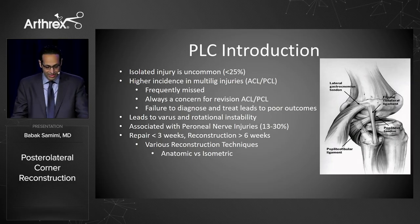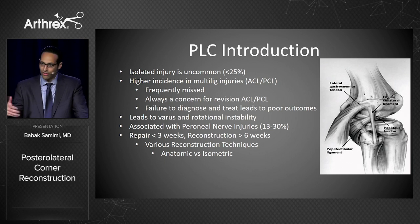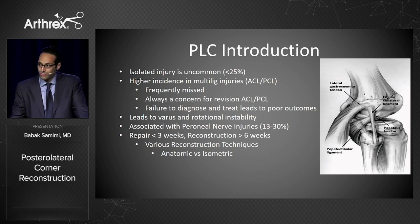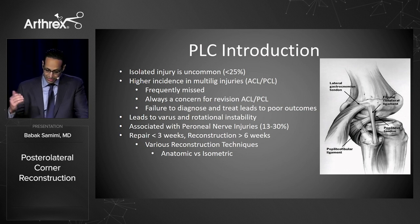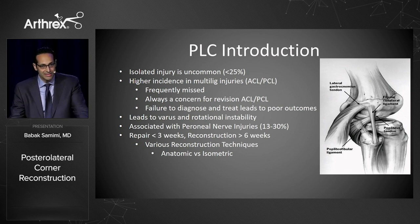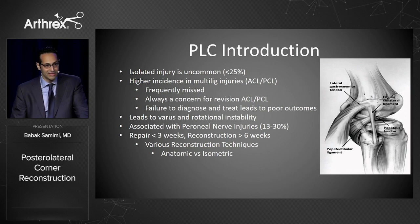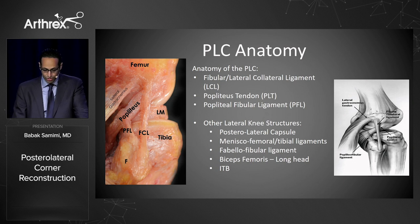Posterolateral corner (PLC) injuries aren't as common as many others. They're typically involved with multi-ligament injuries and are frequently missed. As seen in the prior case presentation, this may contribute to ACL and PCL reconstruction failure rates, leading to varus and rotational instability. These injuries are commonly seen with peroneal nerve injuries. If caught early enough, repair may be possible, but in my practice most come to me for reconstruction because they're more chronic.